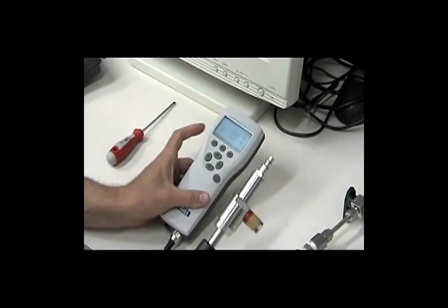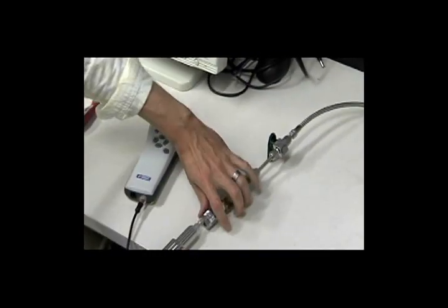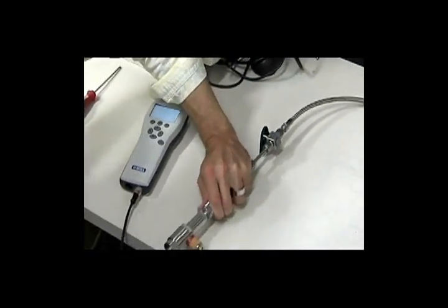Step 2: Connect the male quick connect fitting of the sample cell to the female fitting of your compressed air system.